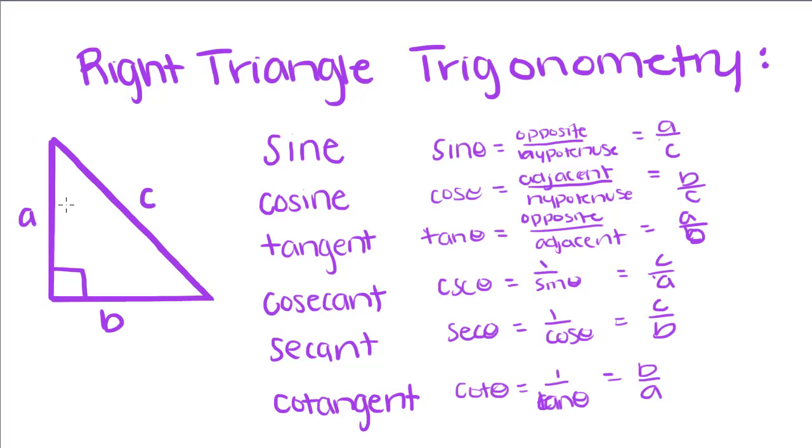So, say we have this triangle ABC, and we have this angle right here, which we're just going to call theta. Theta is just a Greek symbol that we use to represent an angle. Just like we'll use X to represent a side, we use theta to represent an angle.